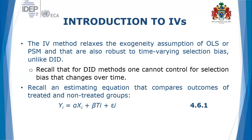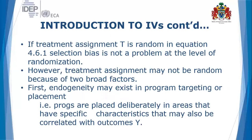The assumption under DiD is that it recognizes unobserved characteristics but assumes these characteristics are time-invariant — they don't change over time. Recall that an estimating equation comparing outcomes of treatment and control groups is specified as: Yi = alpha Xi + beta Ti + error term i. If treatment assignment T is random, then selection bias is not a problem at the level of randomization.